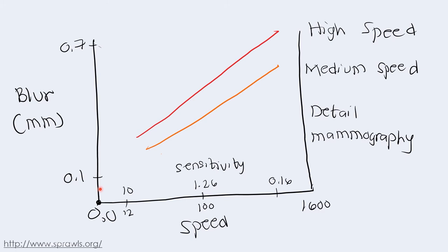On the contrary, screens that have the highest speed cannot produce a detailed image due to high amount of blur.